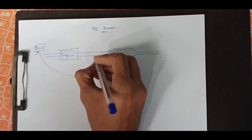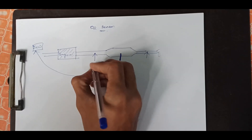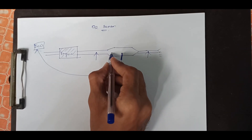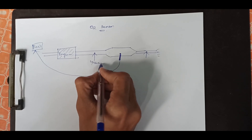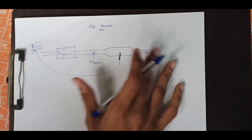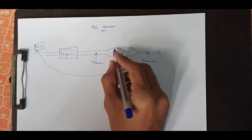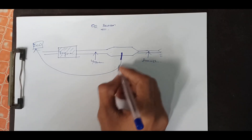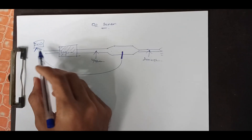In the case of a car, we have two O2 sensors. We have a catalytic converter — one is upstream and one is downstream. So we have two O2 sensors in this vehicle. We have a catalytic converter, and this is the working mechanism.